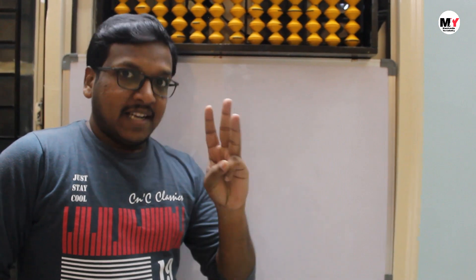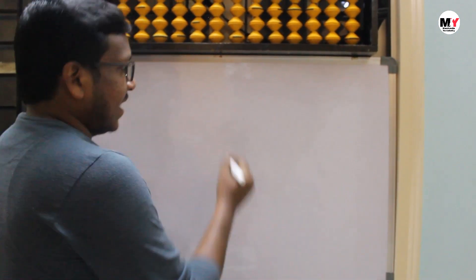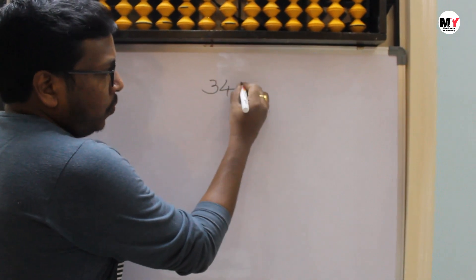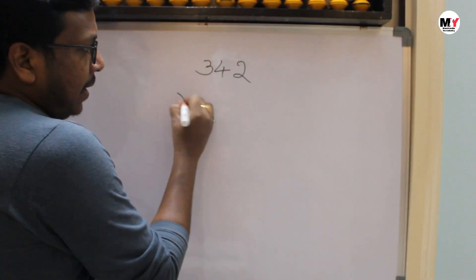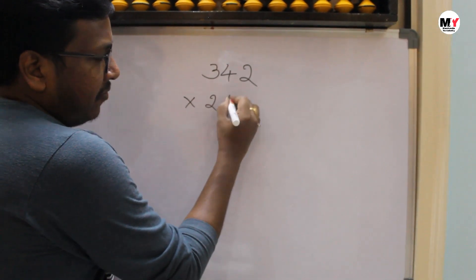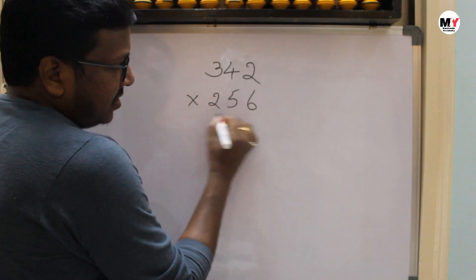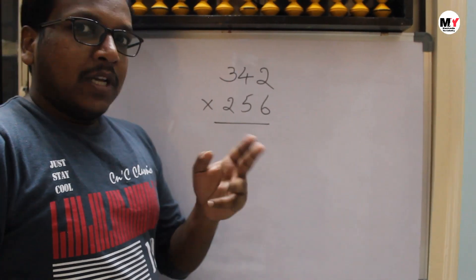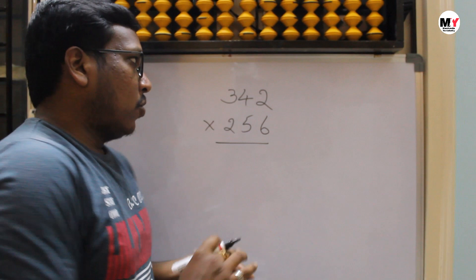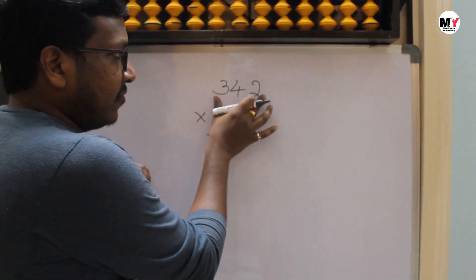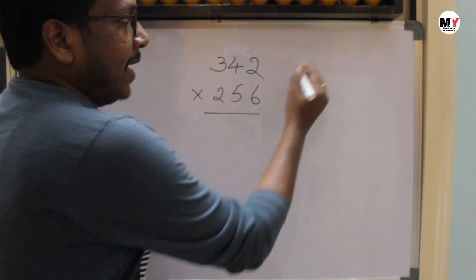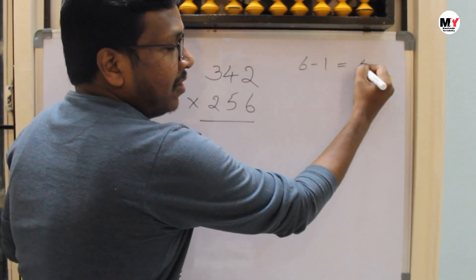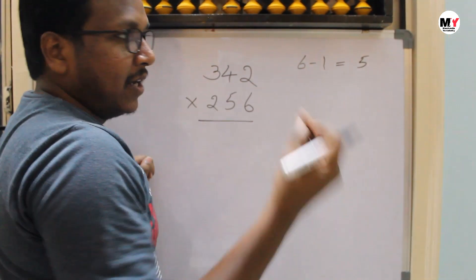Now we will see three digit into three digit multiplication. Let's take an example of 342 multiplied by 256. In three digit into three digit, we have three plus three — six digits. Six minus one steps, that is five steps, we are going to get the answer.